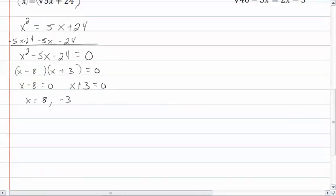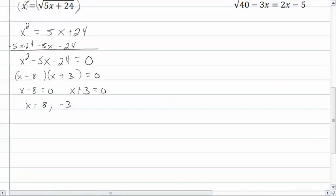So when we put those back into the original equation, let's try our 8 first. We would have 8 = √(5 × 8 + 24). This will give us 8 = √64 and the square root of 64 is 8, so that checks.